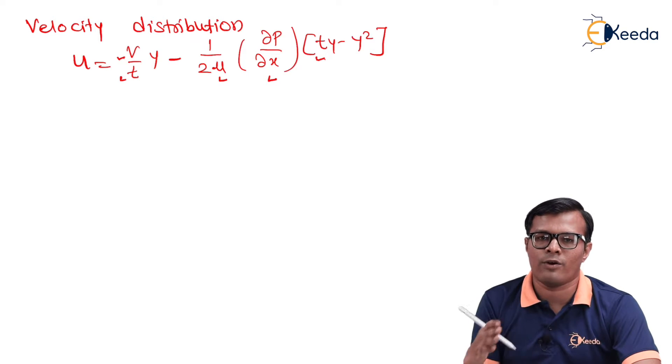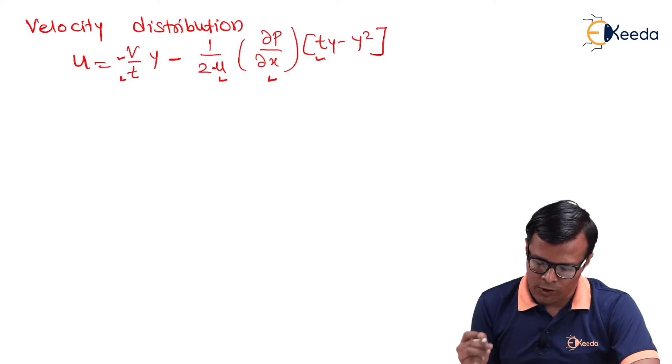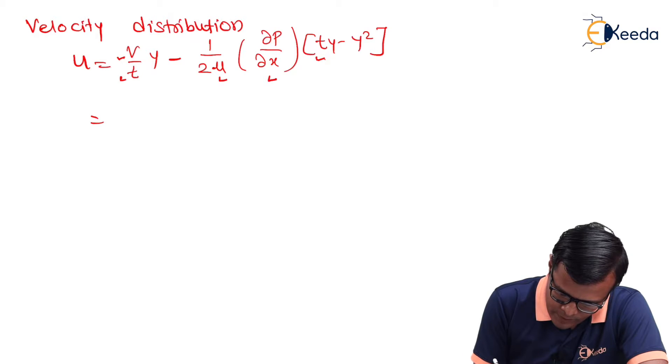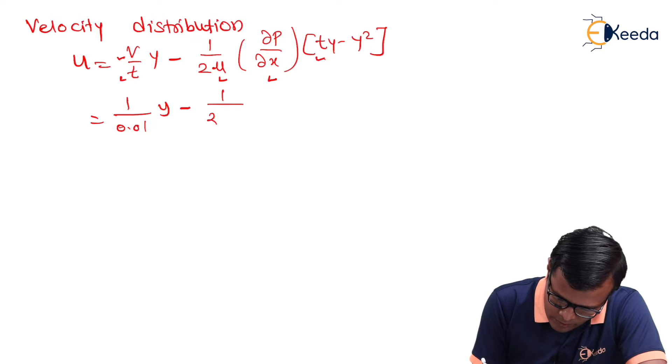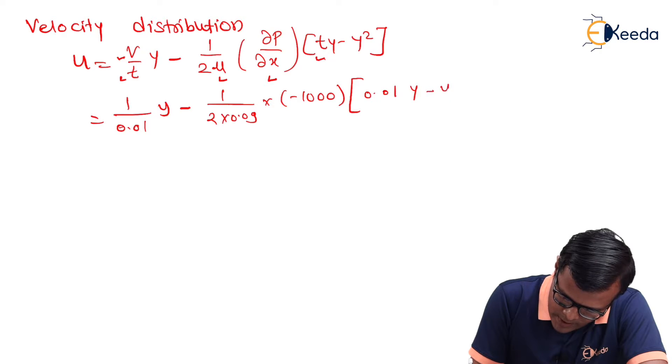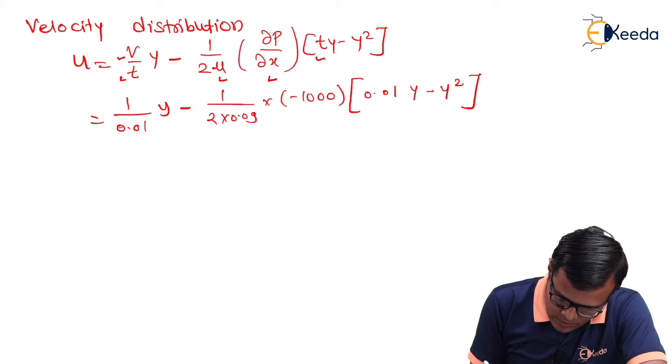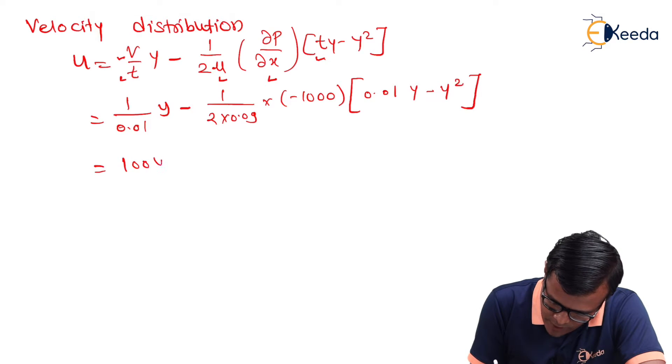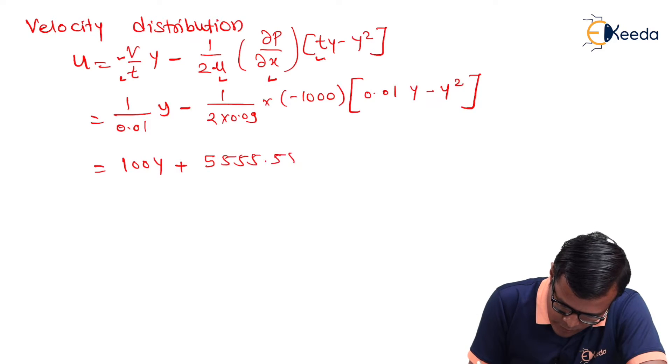Finding velocity distribution means we have to find how the curve is behaving. So, we will put all the known values. So, it will be 1/0.01·y - 1/(2×0.09)·1000·[0.01y - y²]. Just multiplying all the things properly we will have 100y plus 5555.55 times 0.01y minus y².